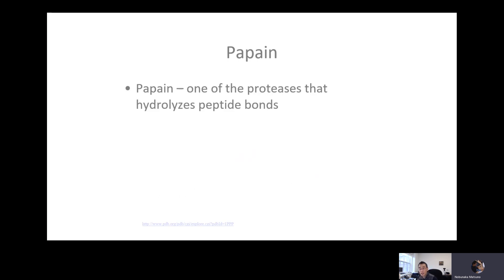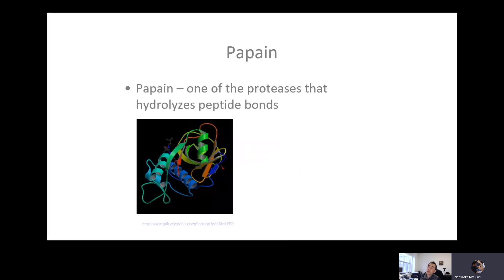So papain is one of the enzymes, just like chymotrypsin — it has been extensively studied. I got the structure from the Protein Data Bank. You can see the catalytic pocket here. It's a cysteine enzyme instead of a serine enzyme, so the actual mechanism itself is pretty similar to chymotrypsin.